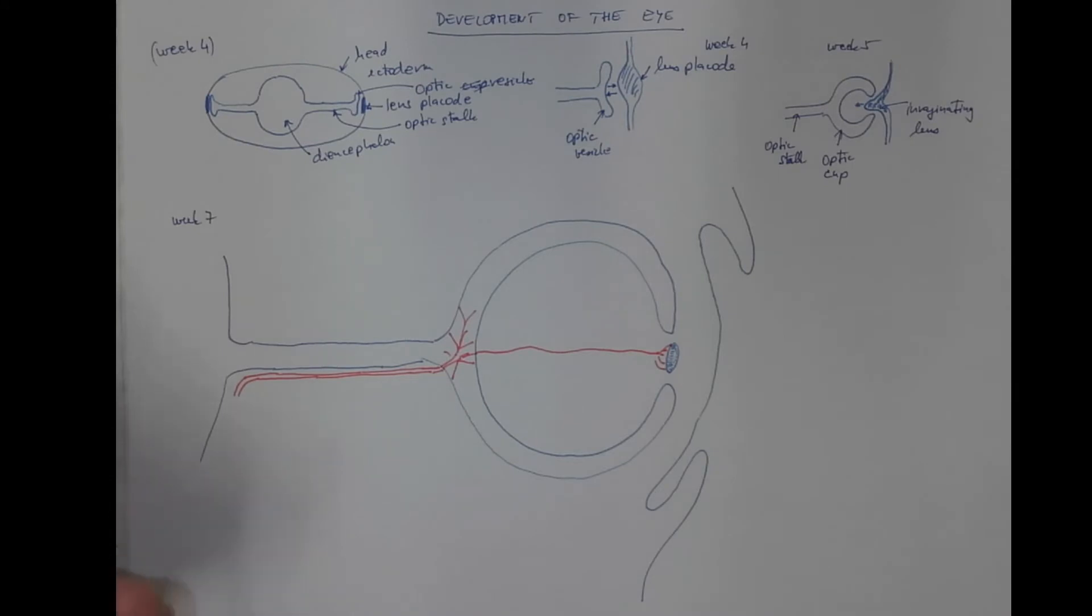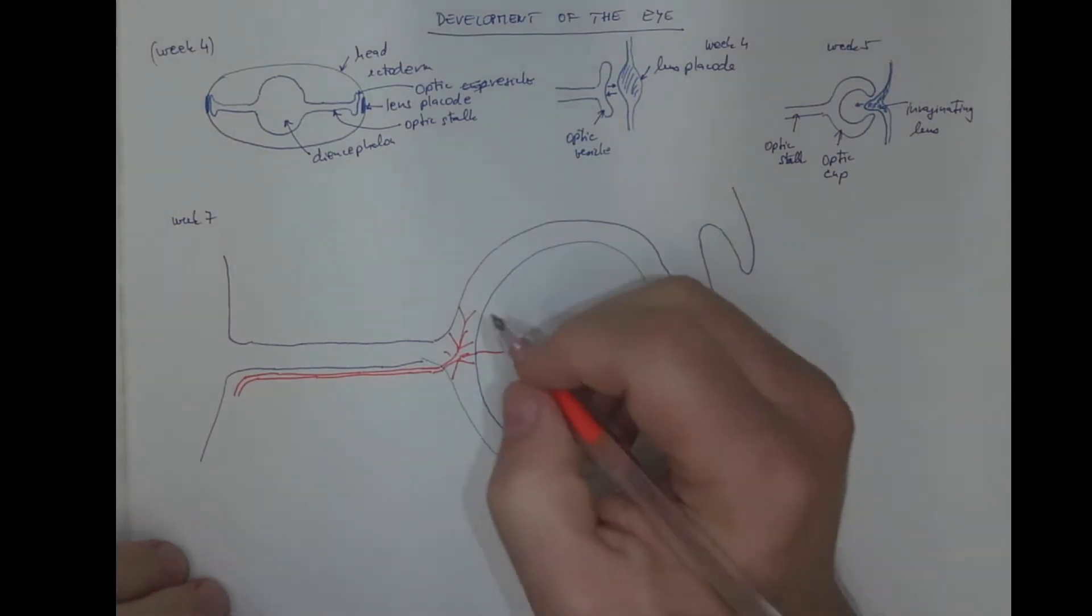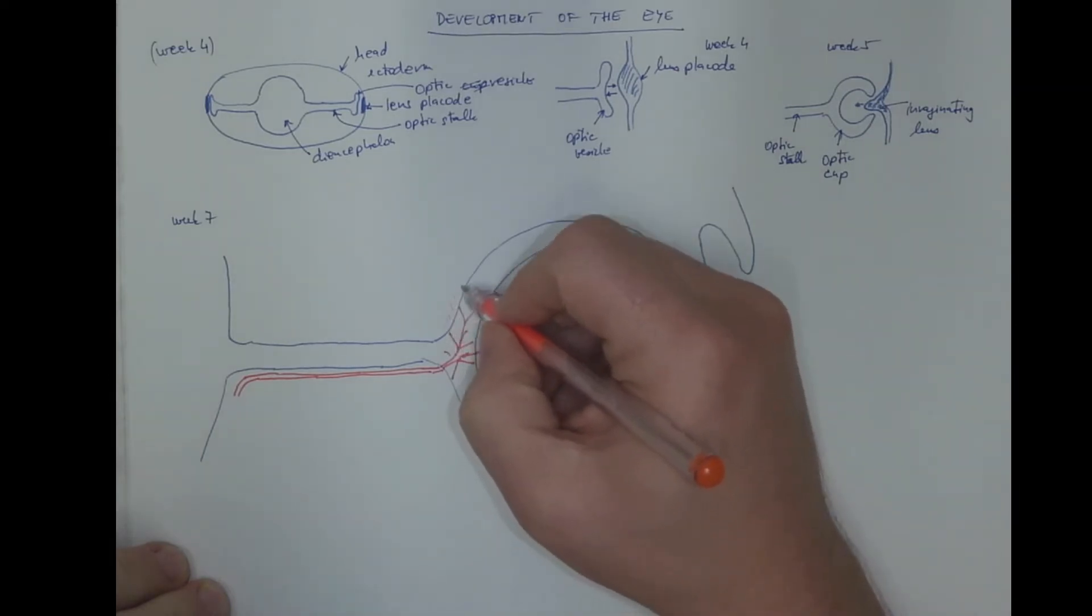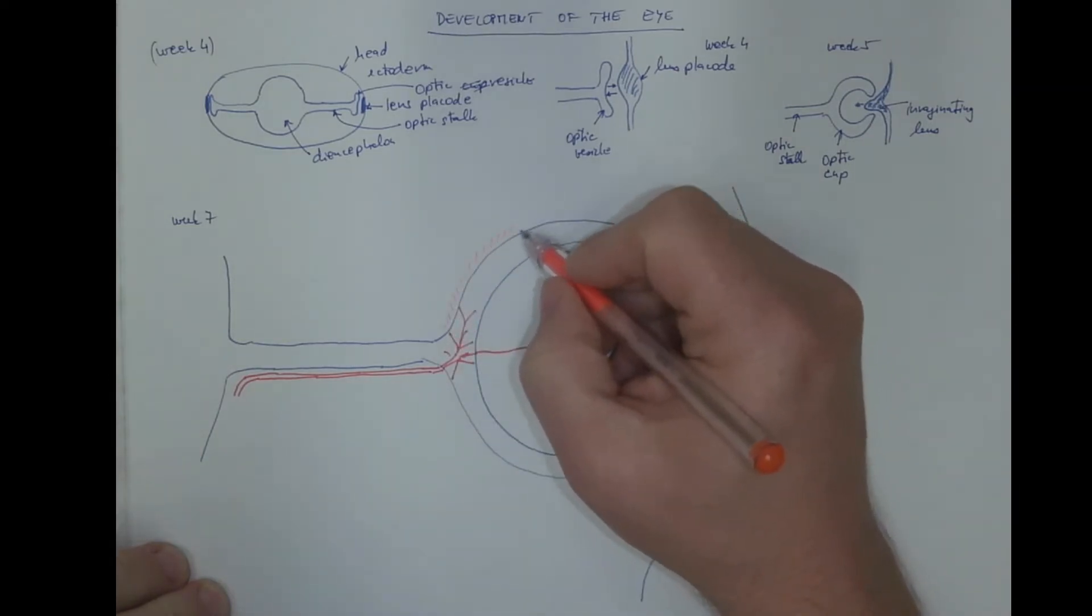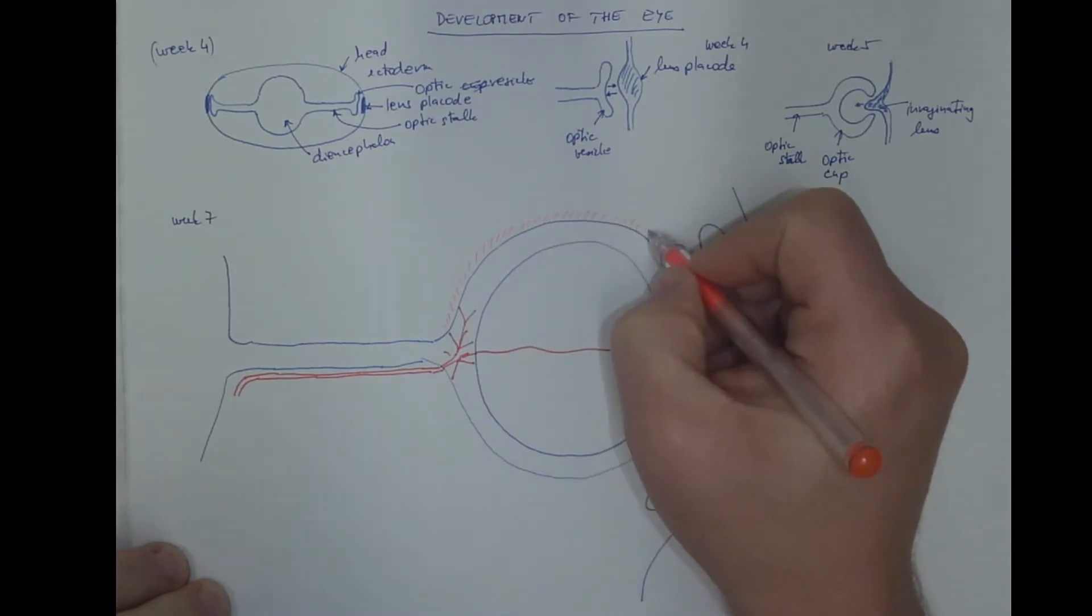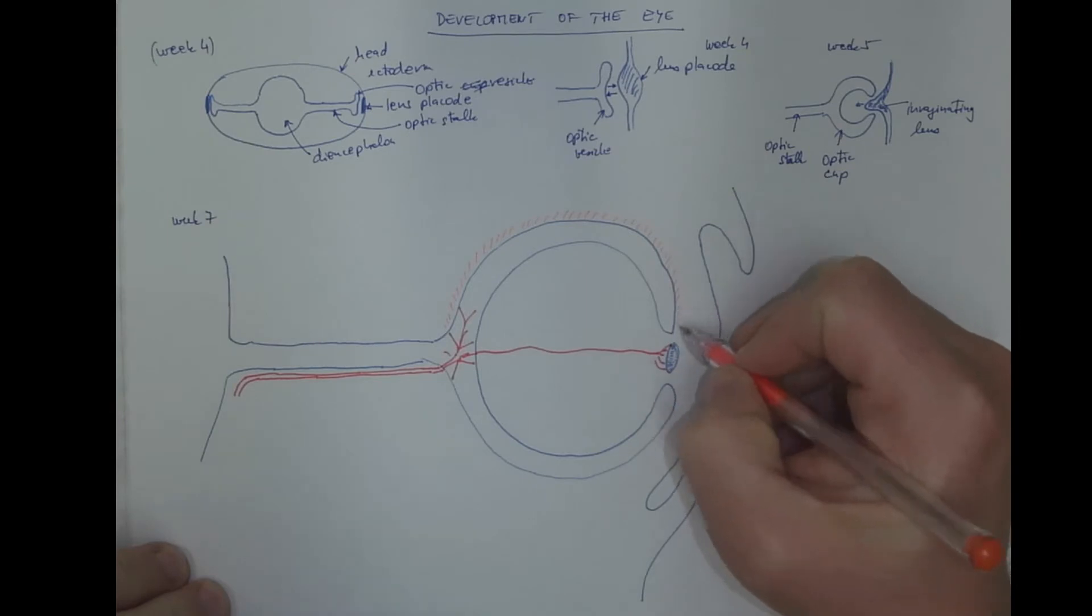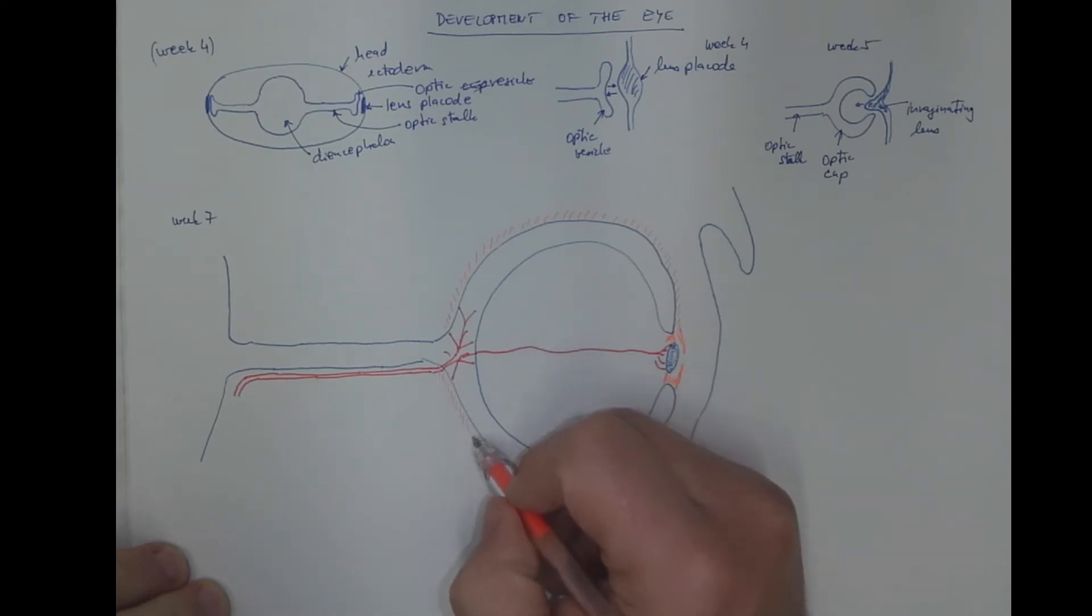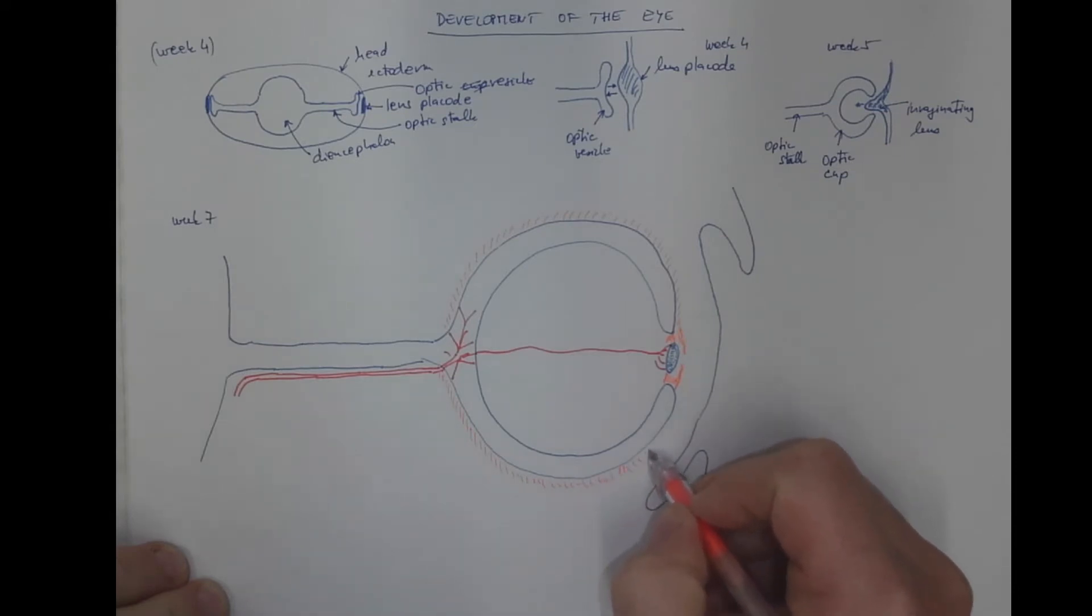The other layers of the eye bulb include the vascular layer, which comprises the choroid and the ciliary body and the iris, which is basically smooth muscle with some connective tissue.